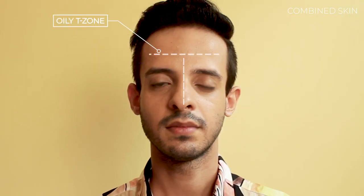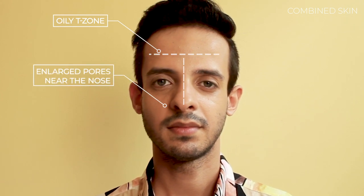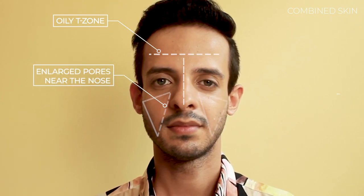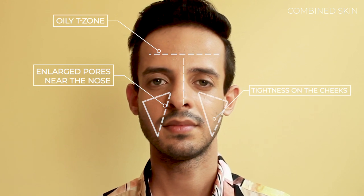Once you know oily and dry skin, combination skin is pretty much a giveaway. Combination skin is when your T-zone is very oily and your cheeks are essentially dry. You'll notice a lot of greasiness on the T-zone and chin, with large pores around the nose. But the outer cheeks will be dry, rough, and stretchy — a clear sign of combination skin.